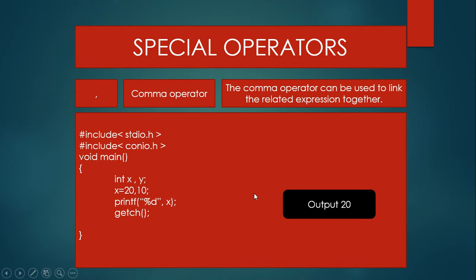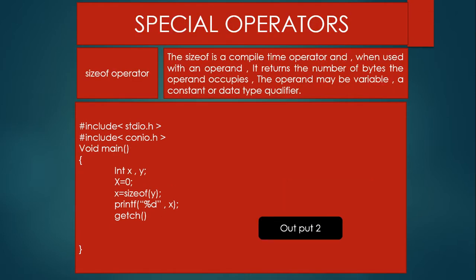Next I am using another special operator: the sizeof operator. The sizeof operator is a compile-time operator and when used with an operand it returns the number of bytes the operand occupies. The operand may be a variable, a constant, or a data type. Simply, the sizeof operator returns the size of any variable, constant, or data type.